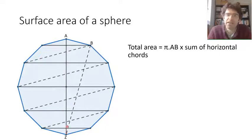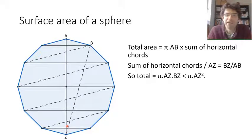So what we end up with is that BZ over AB is equal to the sum of those horizontal chords divided by AZ. And so the total surface area of that inscribed shape turns out to be π times the diameter times BZ. And BZ is of course just a little less than the diameter. So what we've got is a total surface area just a bit less than π times the diameter squared, or four times the area of the circle that we rotated, which of course is π times the radius squared.